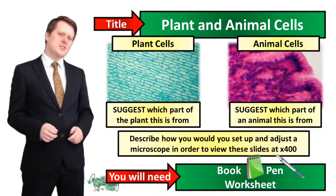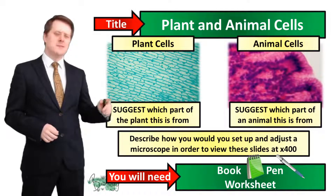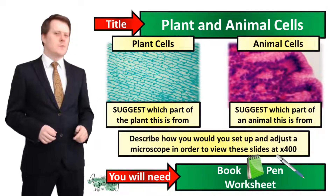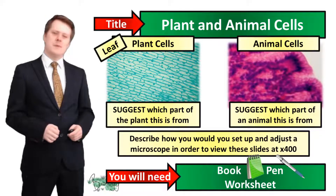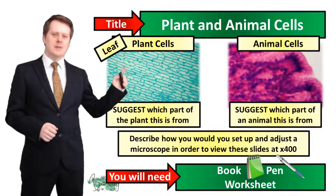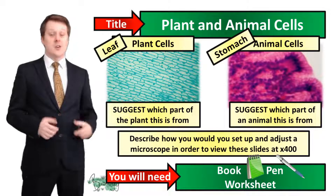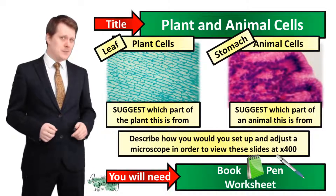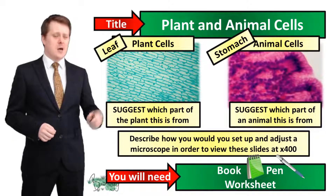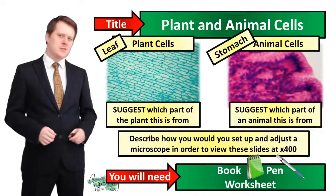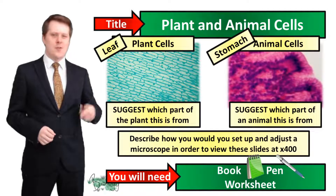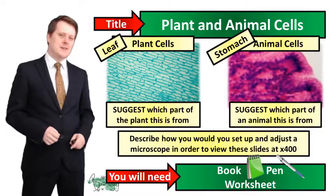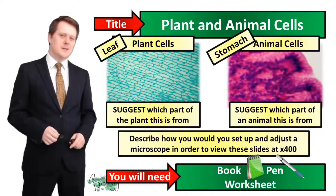Did you make the suggestions? These plant cells come from the leaf of the plant and those animal cells come from the stomach of the animal. I would like to know what you thought these cells were and the reasons why, and you can put that down in the comments below.